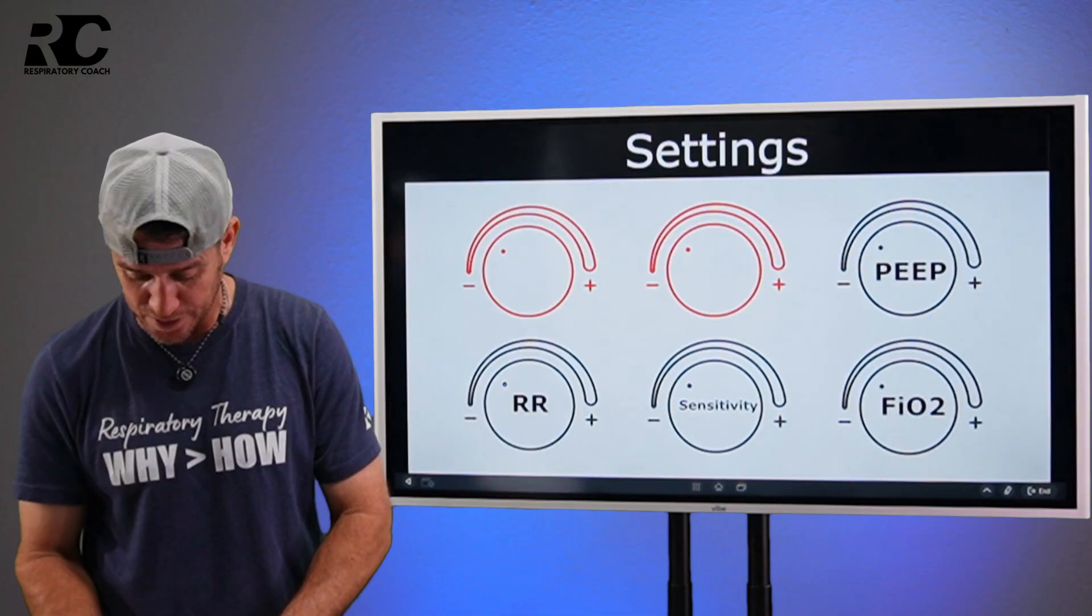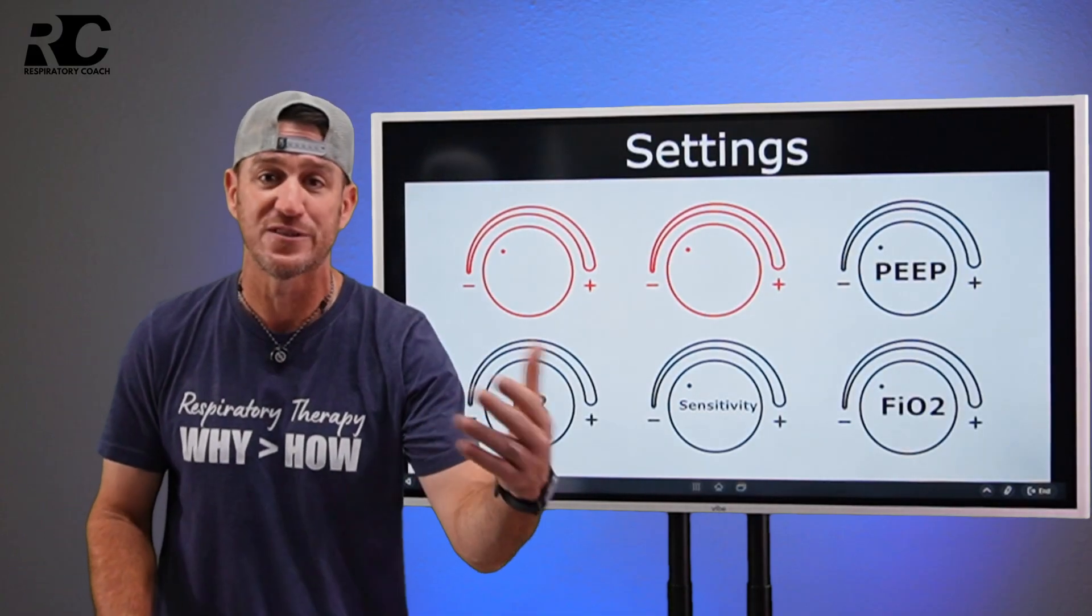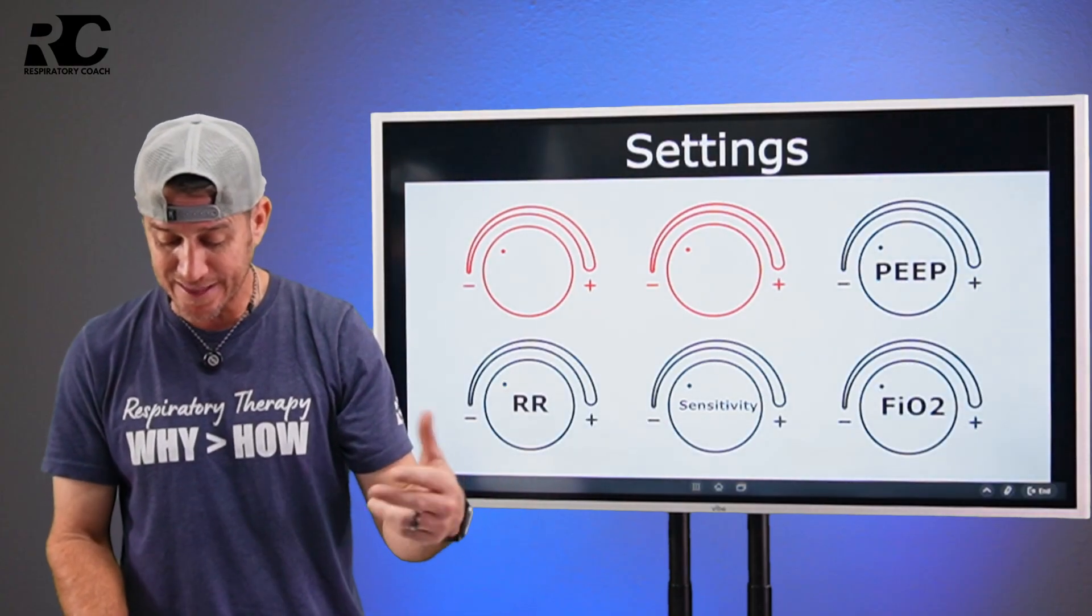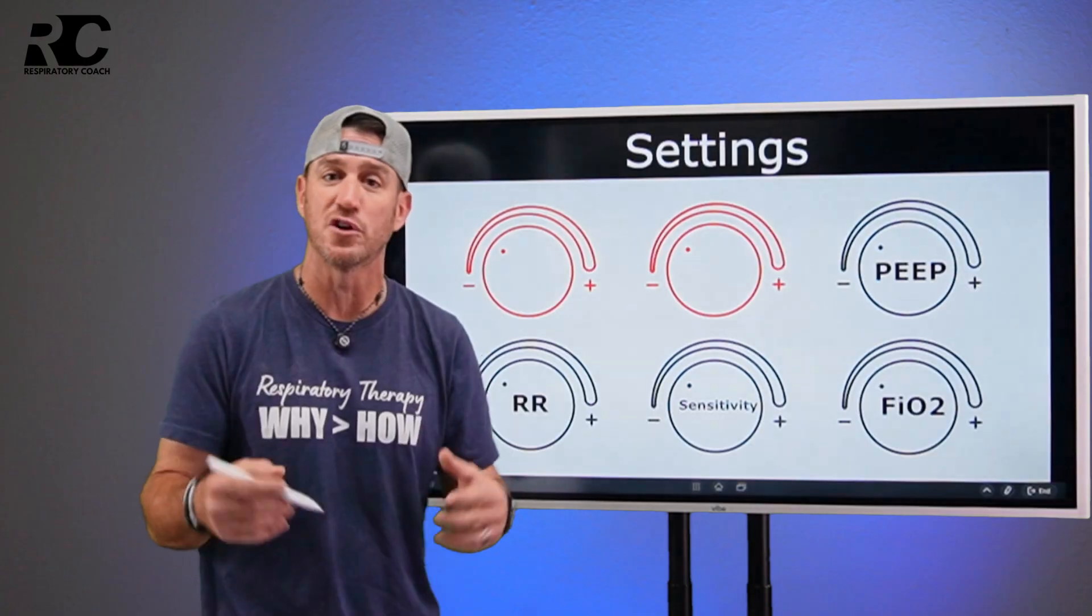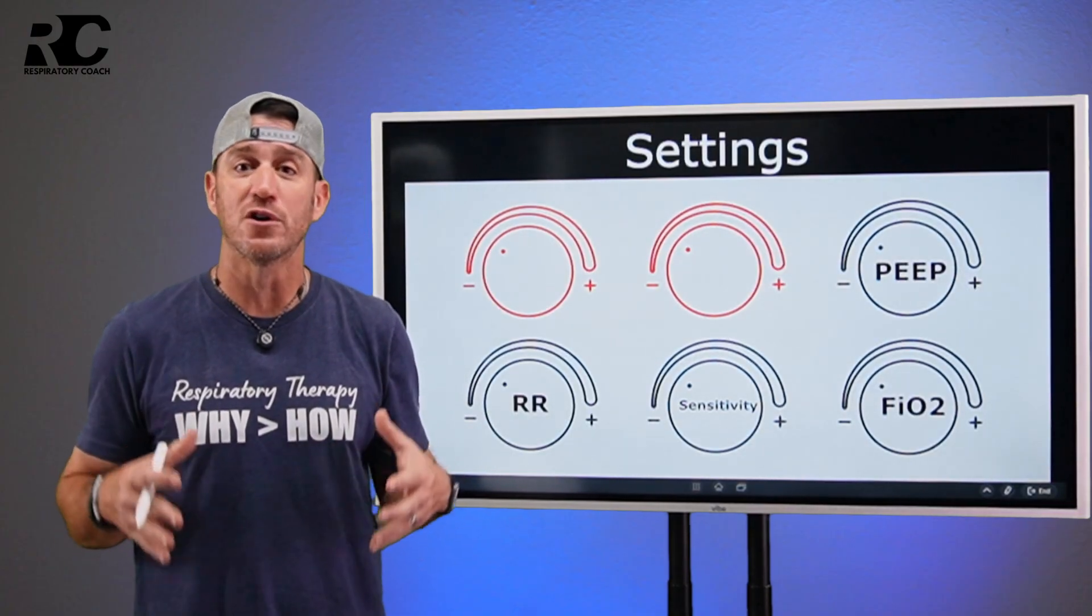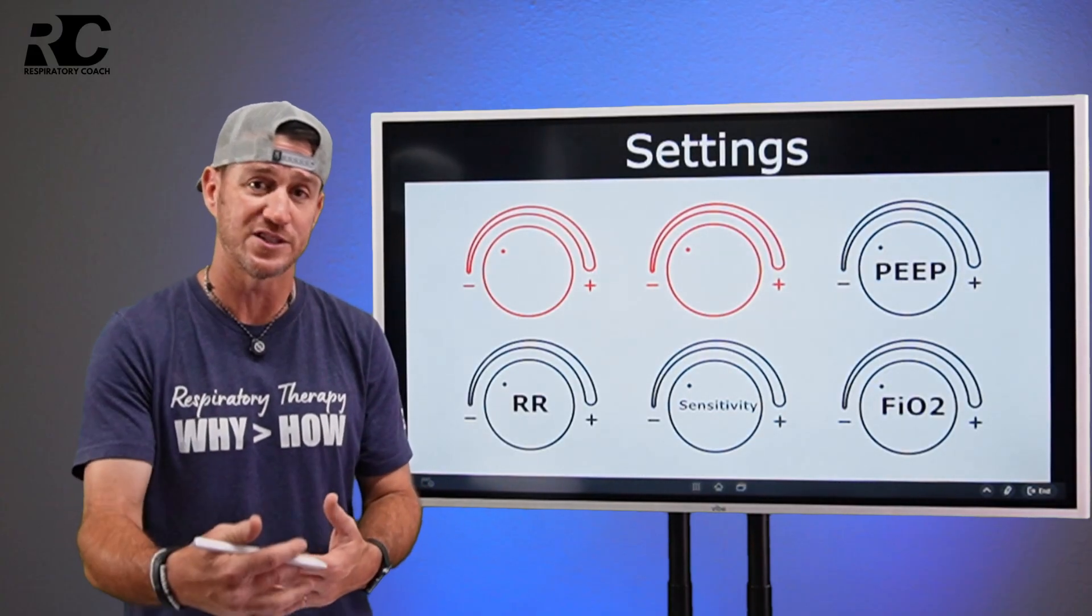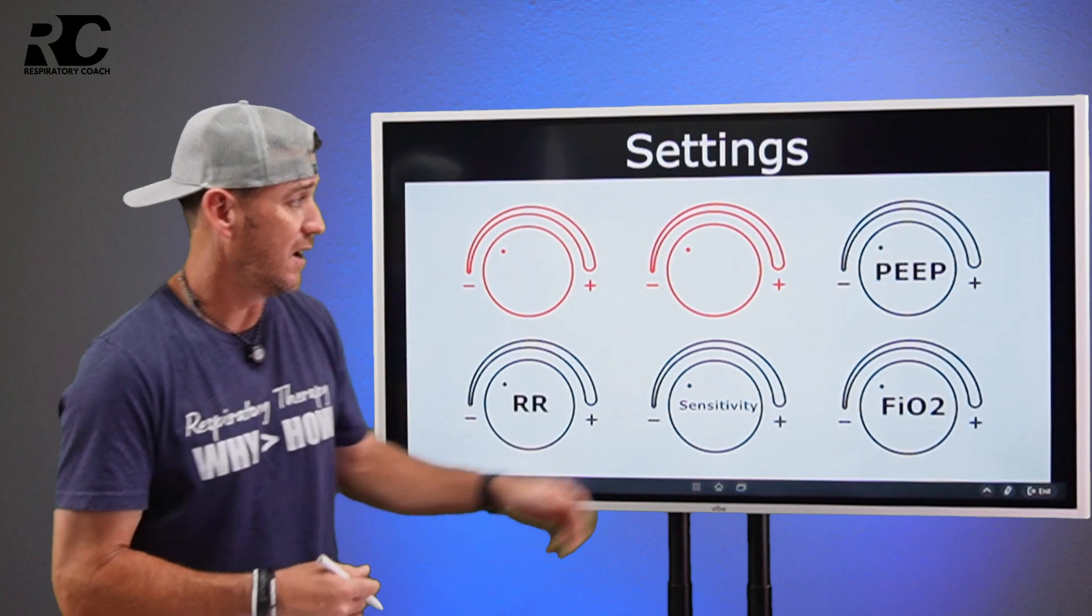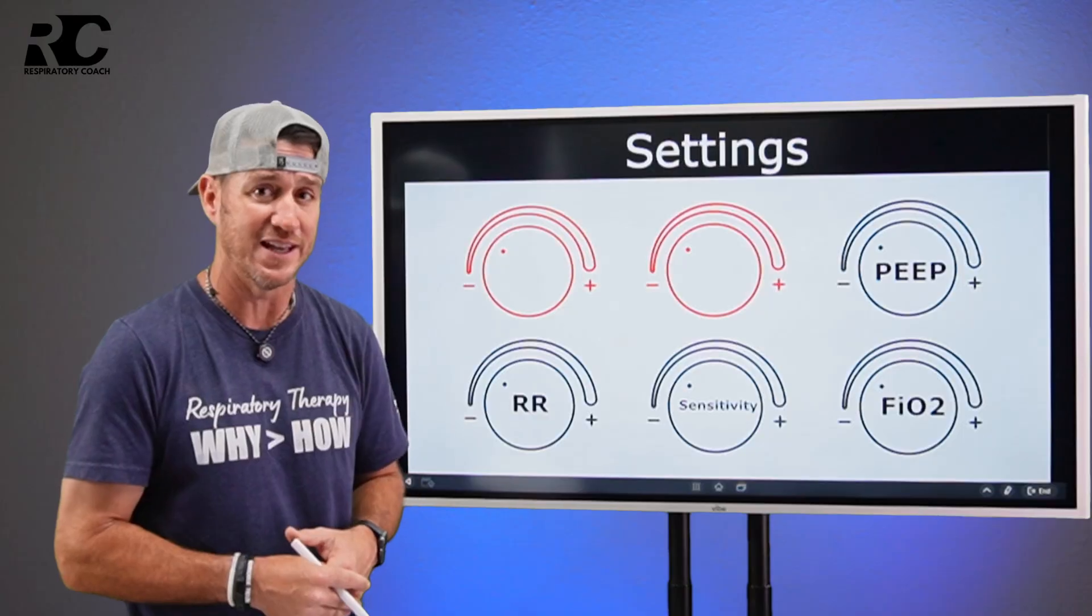Positive end expiratory pressure, the application and maintenance of pressure above atmospheric at the airway throughout the expiratory phase of positive pressure mechanical ventilation. Remember, PEEP serves the purpose of promoting alveolar recruitment, increasing FRC, and improving oxygenation.